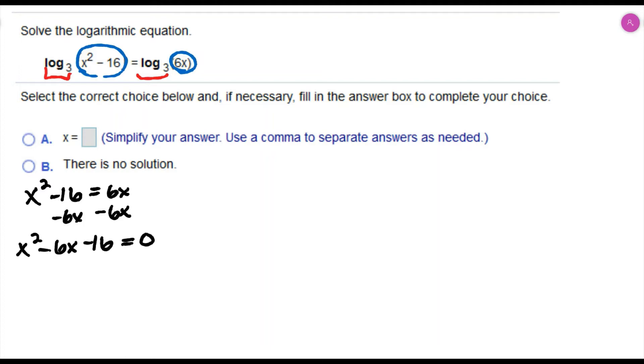I'm going to solve by factoring. This term times this term needs to equal x squared, so that's going to be x and x. This term times this term needs to equal 16, so I need to choose factors of 16. That could be 8 and 2, and 8 and 2 could give me the correct middle term. I need a minus 8 and a plus 2.